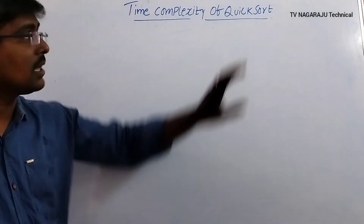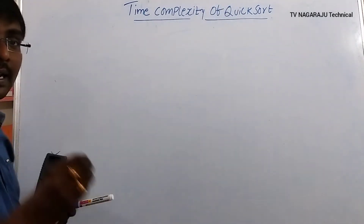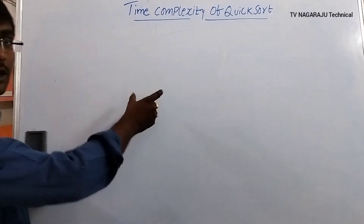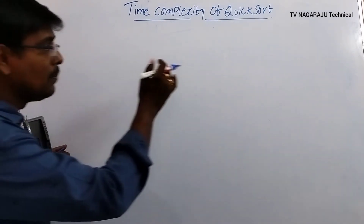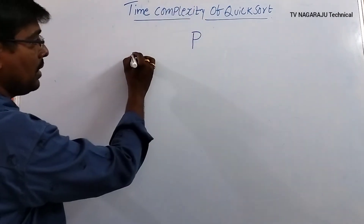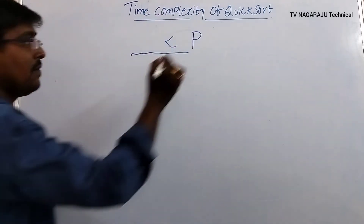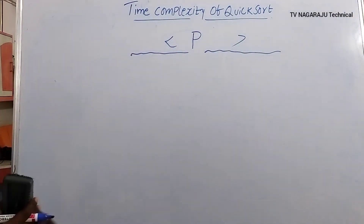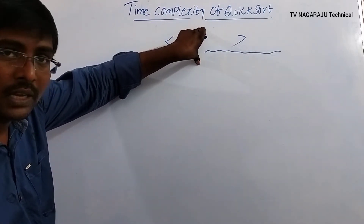We already discussed the algorithm of quicksort with some examples. Simply, what is quicksort? Consider one element as the pivot element. Generally, we assume the first element is the pivot element. The pivot element is moved to a position in the list such that the elements to the left of the pivot are less than it, and elements to the right are greater. After the pivot moves, the position of the pivot is fixed.